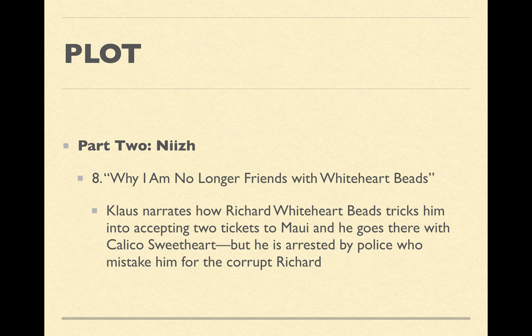Chapter Eight is a brief comic story: Richard Whiteheart Beads betrays Klaus by giving him two tickets to Maui, knowing investigators would mistake Klaus for Richard and arrest him for the illegal dumping. Investigators follow Klaus and Sweetheart Calico the whole time; Klaus ends up arrested and brought back to Minnesota to face charges.